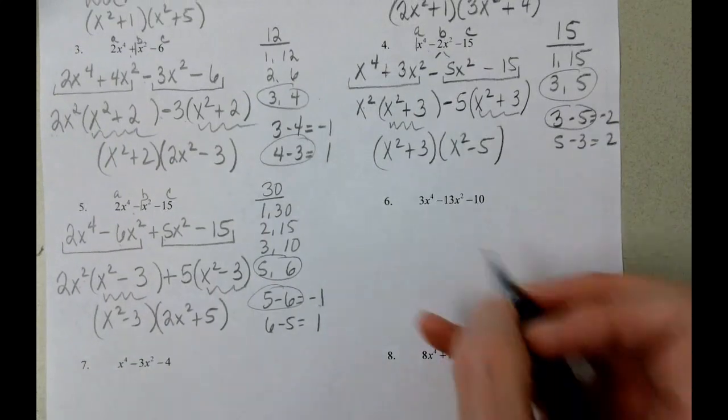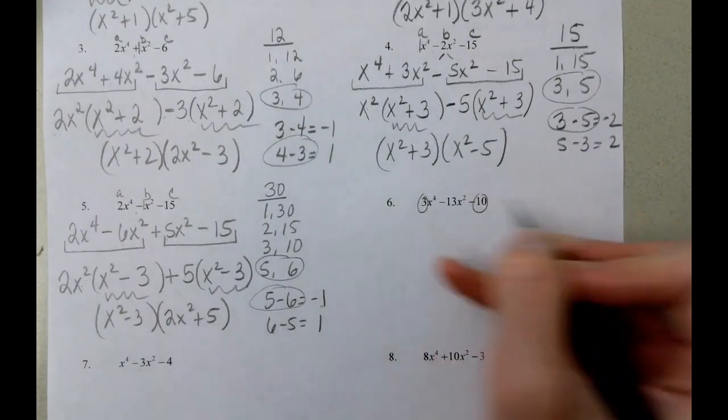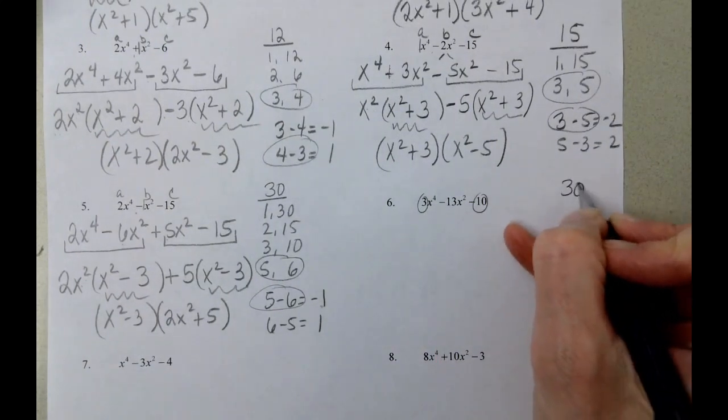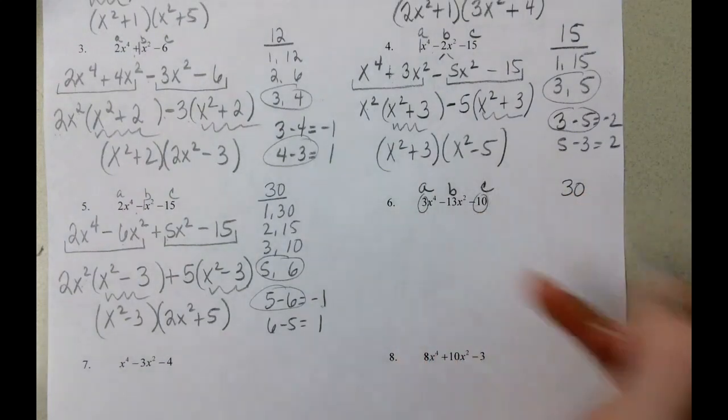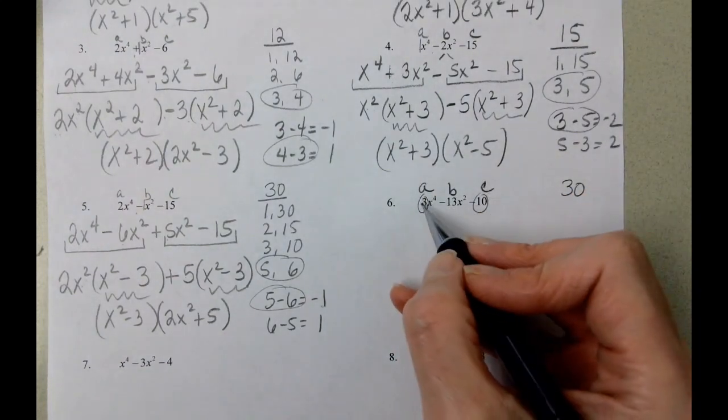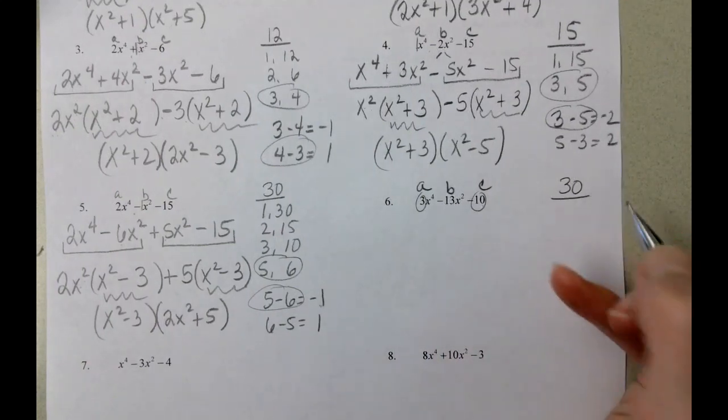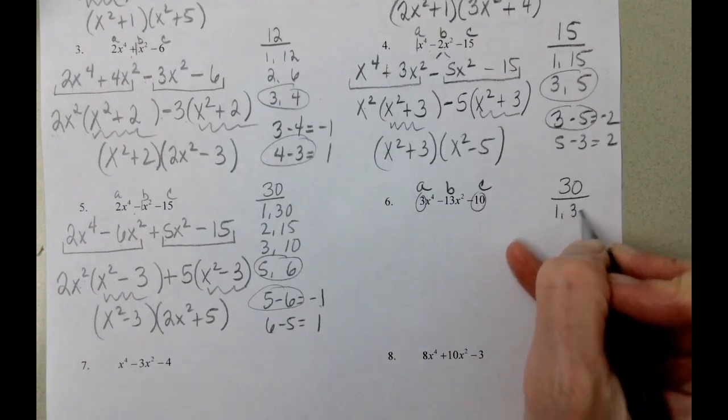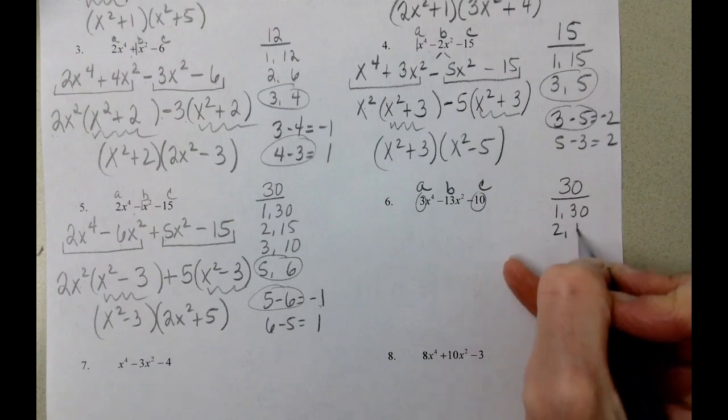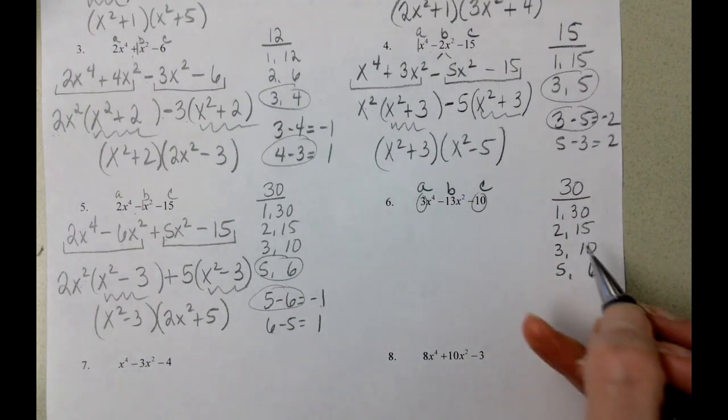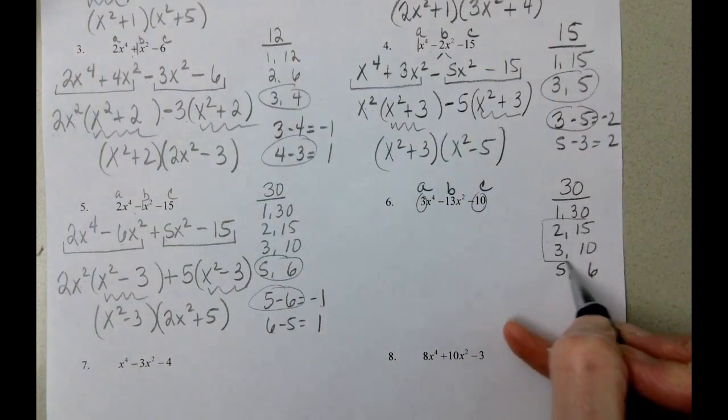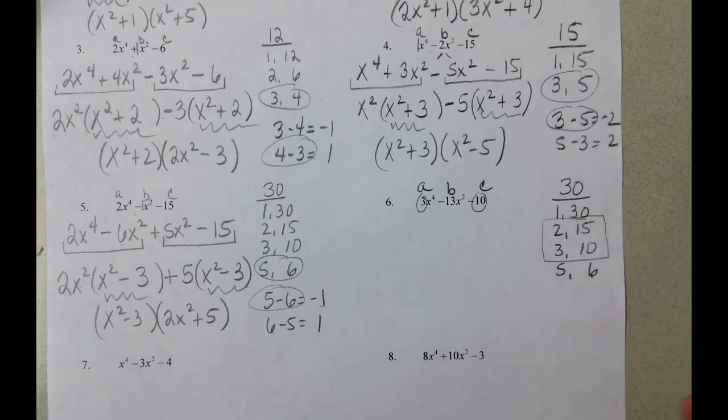Problem number 6. 3 times 10 is 30. This is a, this is b, this is c. We just wrote down those factors on the last problem: 1 times 30, 2 times 15, 3 times 10, 5 times 6. This time we need 13, and that's going to require us to pick one of these.